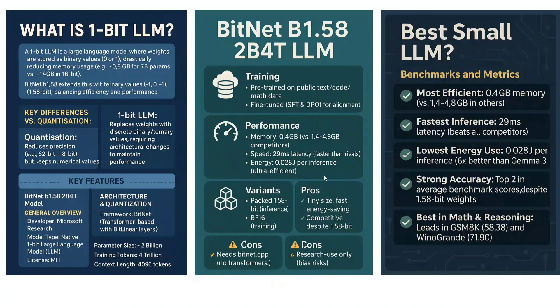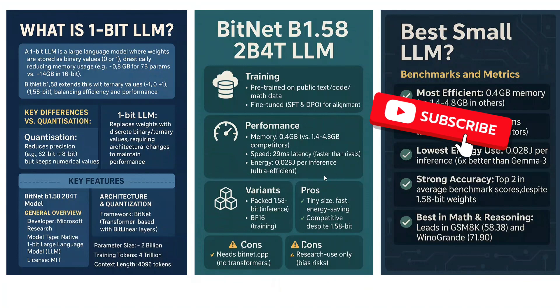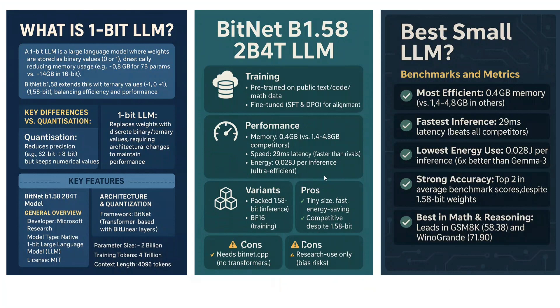Hi everyone, the biggest news of the year is out. If you remember, last year Microsoft released a paper called 'The Era of 1-Bit LLMs,' where they introduced LLMs with weights stored in just one bit. Now the first LLM in that range has been released: BitNet b1.58 2B4T, and it looks bonkers on benchmarking — it appears to be the most balanced small-size LLM so far.